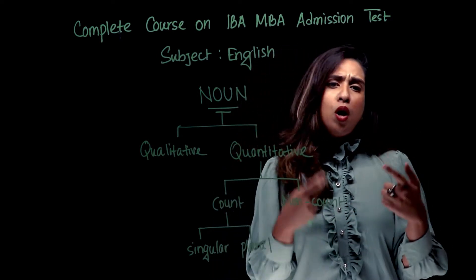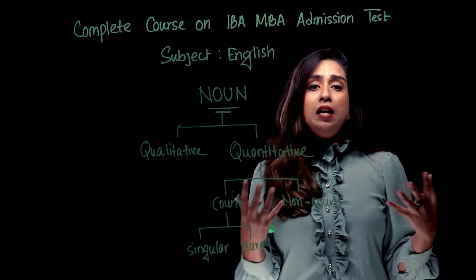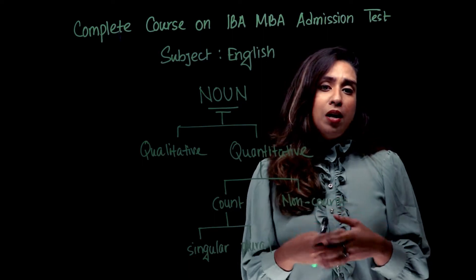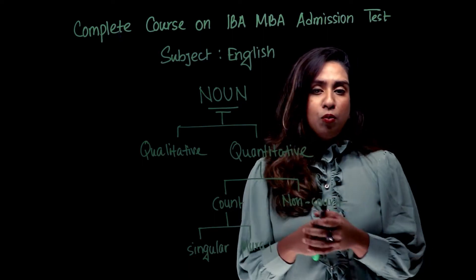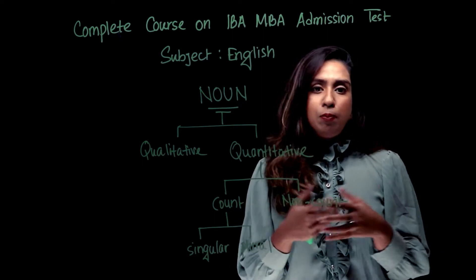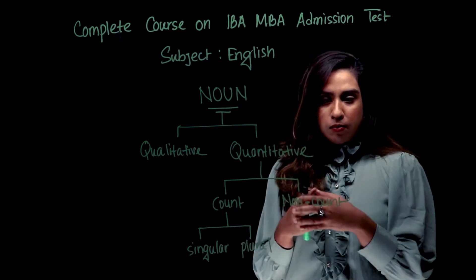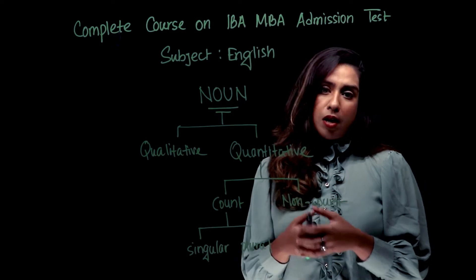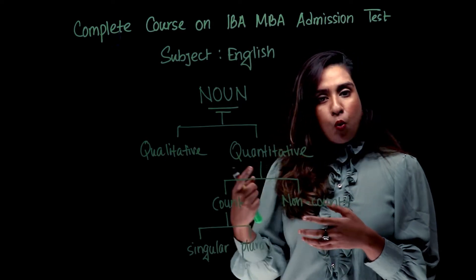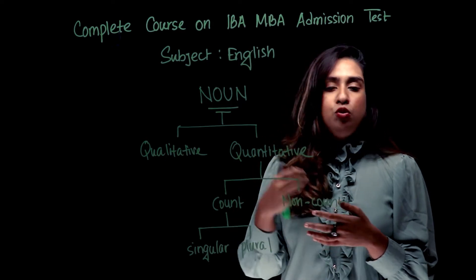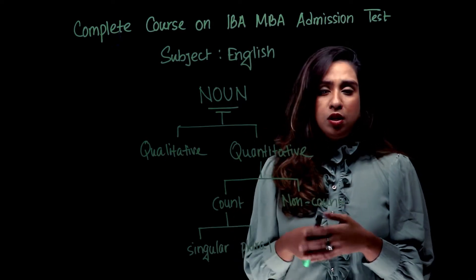For example, one, two, three, four, five. What is a chair? One chair, two chairs, three chairs. So that means when we count, we can count.